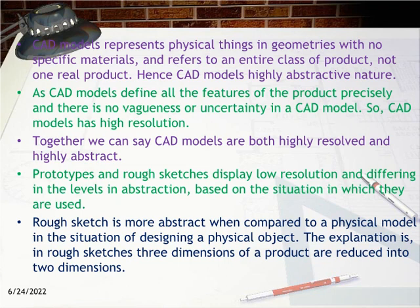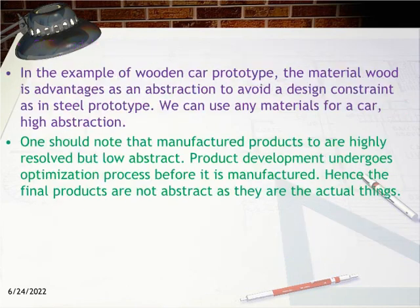Prototypes and rough sketches display low resolution but differ in levels of abstraction based on the situation in which they are used. A rough sketch is more abstract compared to a physical model when designing a physical object, because in rough sketches, three dimensions of a product are reduced into two dimensions. In the wooden car prototype example, the material wood is advantageous as an abstraction to avoid design constraints, unlike a steel prototype. Manufactured products are highly resolved but low abstract, as the final products undergo optimization and are the actual things.